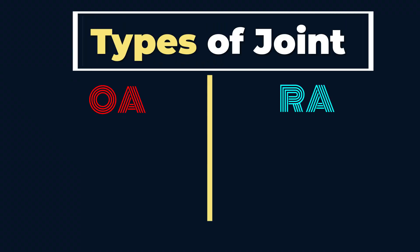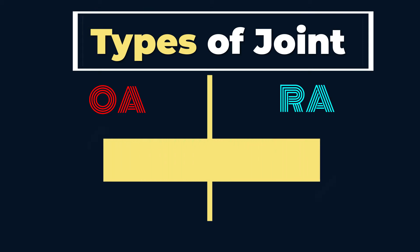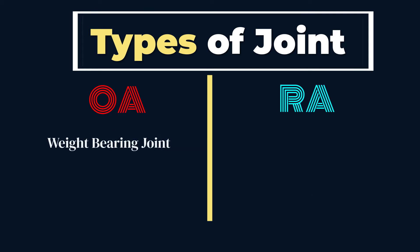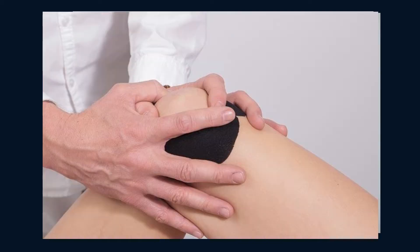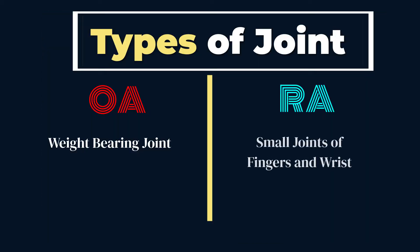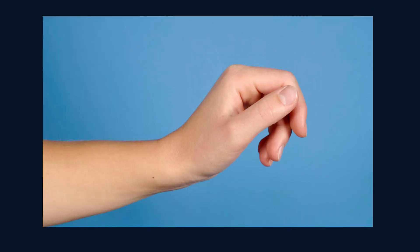Number five: the types of joint involvement. Both diseases can affect any big or small joint in your body. Although OA does tend to favour weight-bearing joints — for example, hips, knee, and shoulder — while RA tends to favour smaller joints, for example, fingers and wrists.